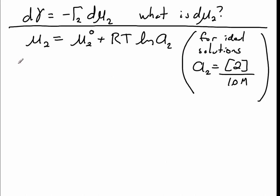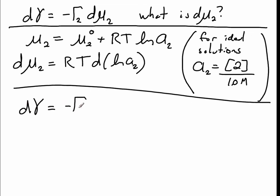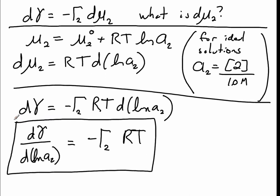Taking the differential of the chemical potential expression gives dμ_2 = RT d ln(activity). Plugging this into our expression, we have dγ equals negative Γ_2 times RT times d ln(activity of component 2). Gathering the differentials into a derivative: dγ / d ln(a_2) = −Γ_2 RT. This is the mathematical form of the Gibbs adsorption isotherm. We'll examine this on a conceptual level in the next screencast.